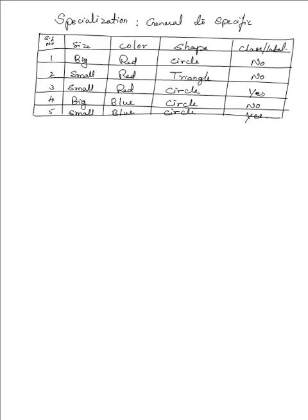Given a dataset, we have to classify whether it belongs to the class or label circle or triangle. There are three attributes: size, color, and shape. All three are independent attributes and the label or class is the dependent attribute. This is our target function f of x.